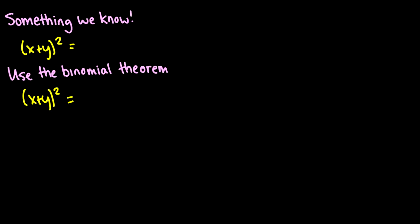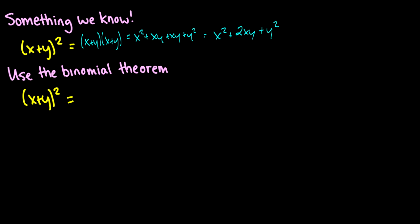Let's put it to use. First let's do it the way we know: (x + y)^2. That's (x + y)(x + y), which expands to x² + xy + xy + y², which is x² + 2xy + y². Now let's do the same thing using the binomial theorem: 2 choose 0 times x² y^0, plus 2 choose 1 times x^1 y^1, plus 2 choose 2 times x^0 y².